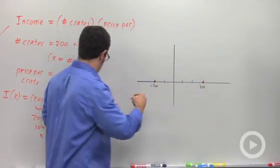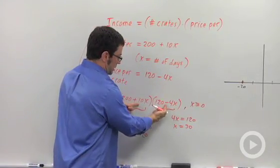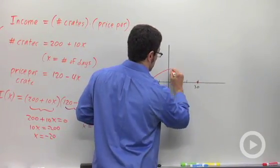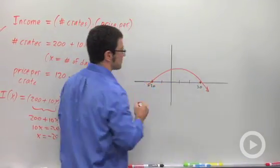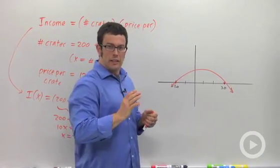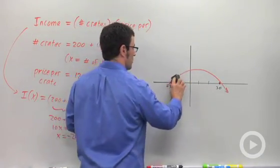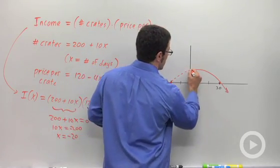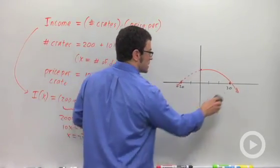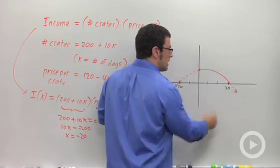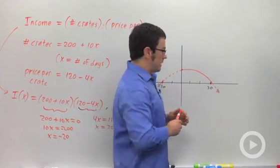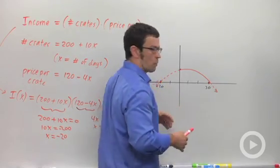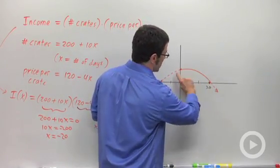Let me draw a rough graph of this quadratic. It's downward opening because the leading coefficient is negative 40x squared. We're not concerned with the negative part—that represents negative days, which doesn't make sense. We're also not concerned with the part beyond x equals 30, where income is negative. That represents when the price is actually negative, which doesn't make sense. We'll stay between 0 and 30.